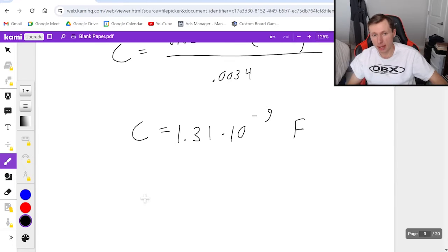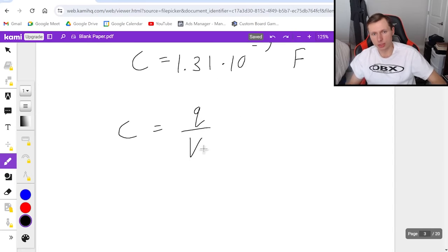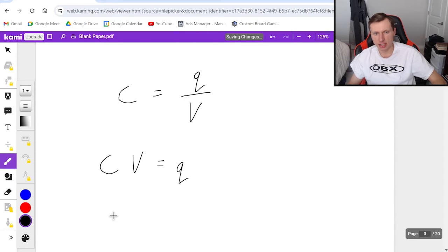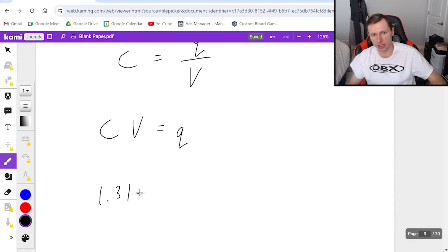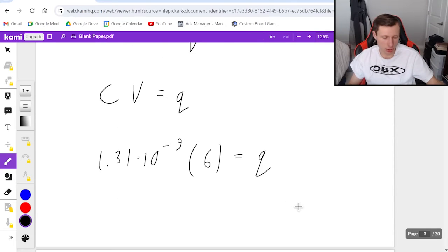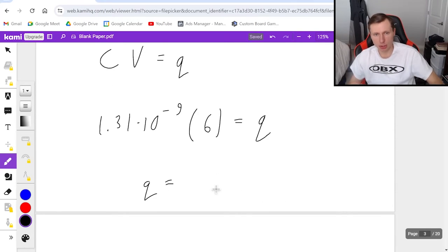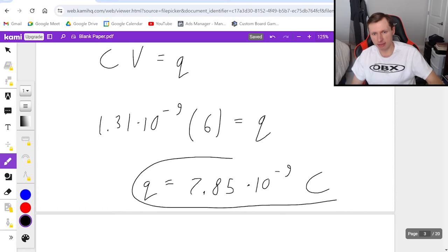And once I have the capacitance, I just have to plug it in the equation C equals Q over V. So since I'm solving for charge, just multiply both sides by V. So the charge is going to be C times V. In other words, 1.31 times 10 to the minus ninth times the voltage, which was 6. That's going to be my charge. And that'll get me a final charge of 7.85 times 10 to the minus ninth units for charge. That is the coulomb, and that's my final answer.